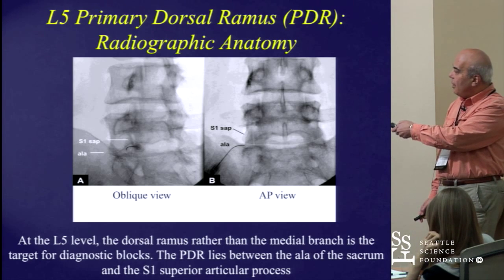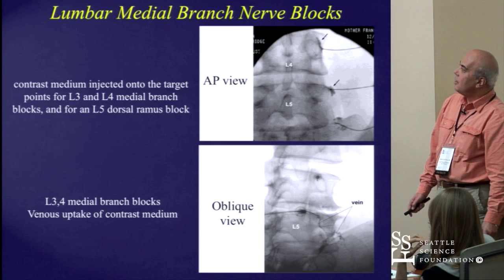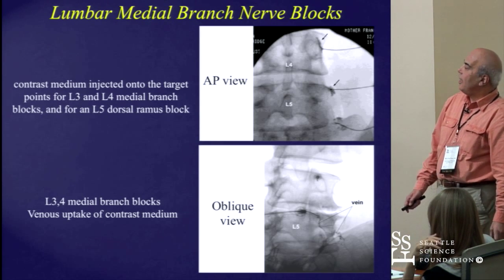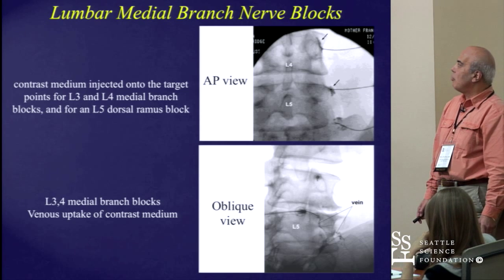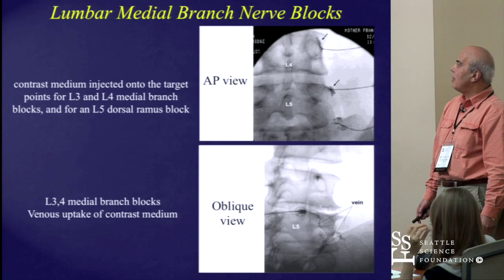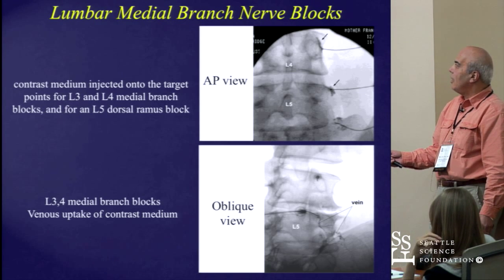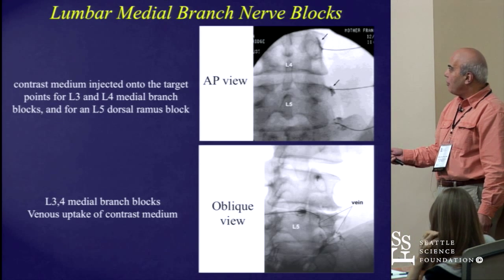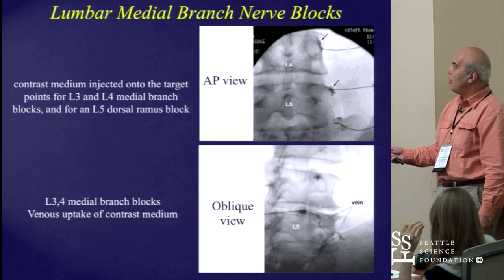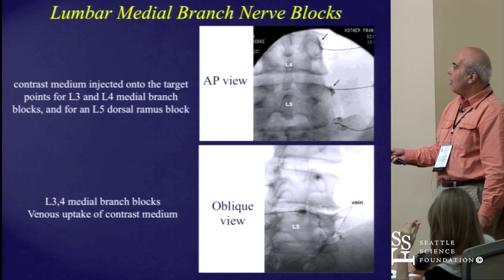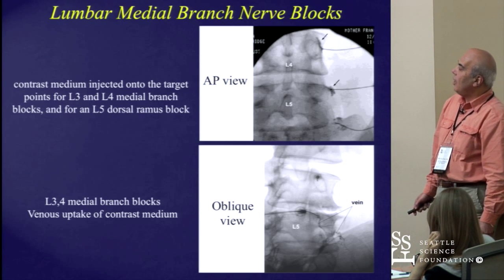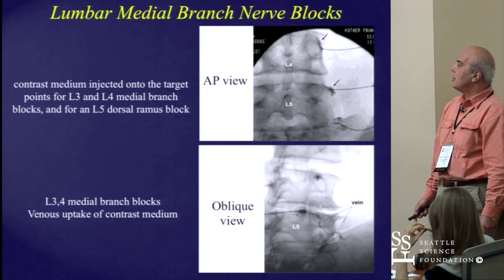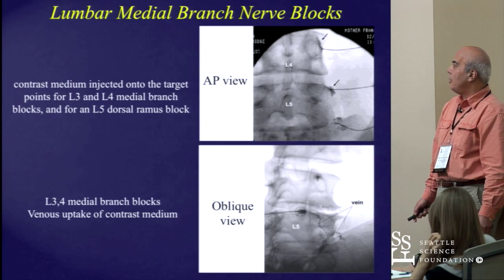These are pictures taken after performing medial branch blocks at the L3 and L4 medial branch level and the L5 primary dorsal ramus level. You can see how the contrast lies along the confluence between the transverse process and superior articular process at L4 and L5 medial branch levels, and along the ala of the sacrum and the S1 superior articular process at the L5 primary dorsal ramus level.